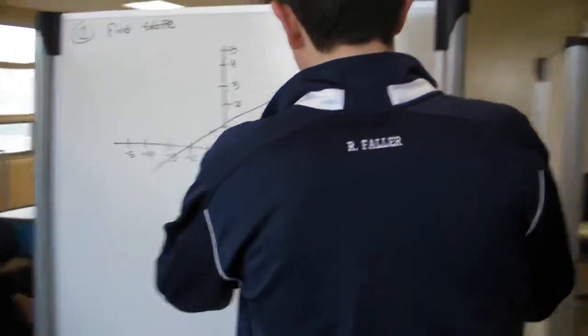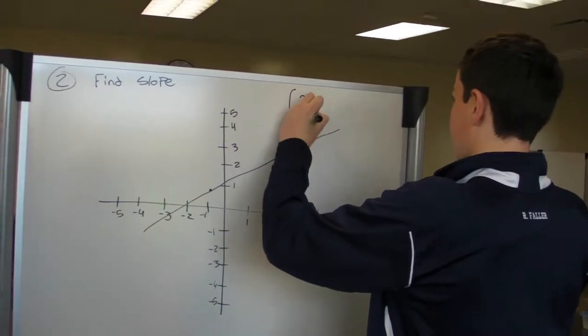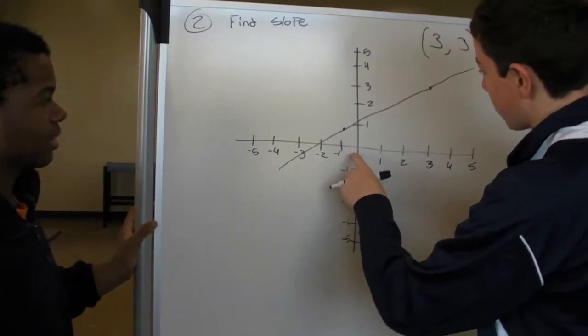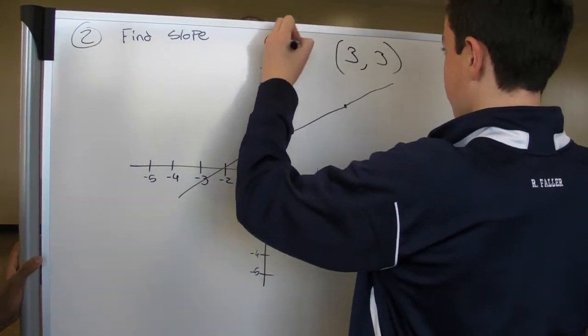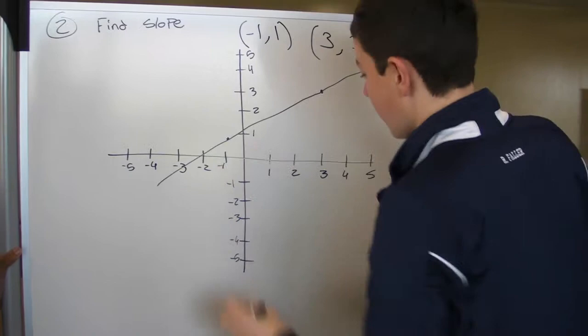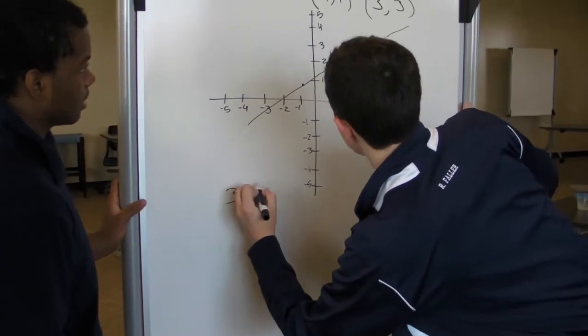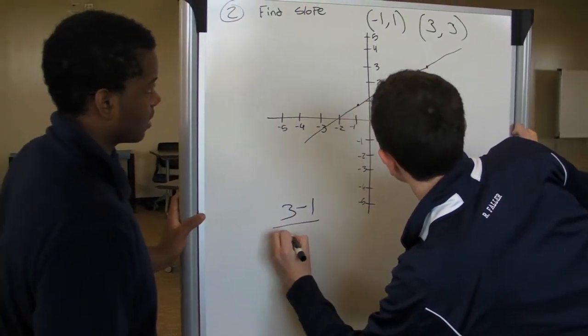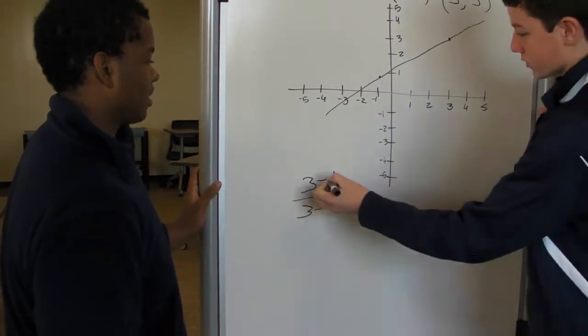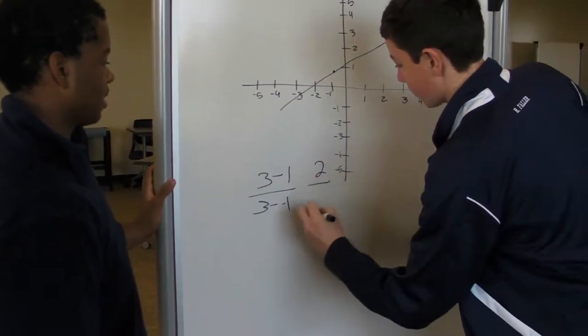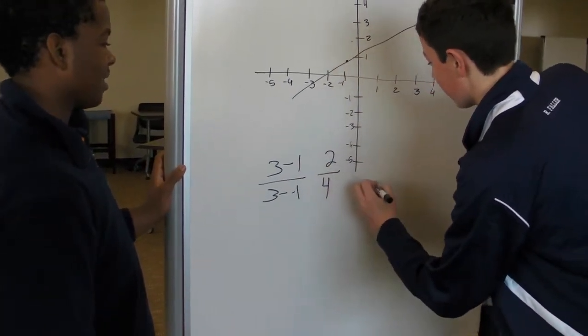So first, you need to find the two points. Three, three. Then find the next two points. Negative one, one. And then you set it up in a rise over run formula. So the rise would be two, and the run would be four, which simplifies to one-half.